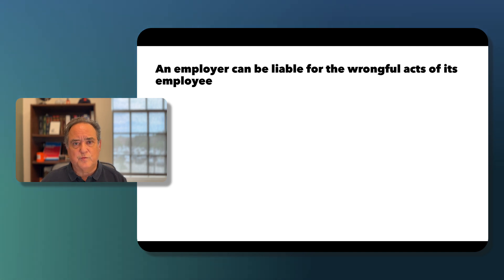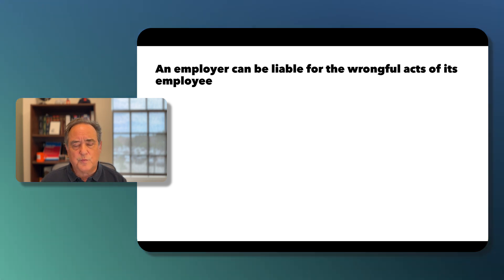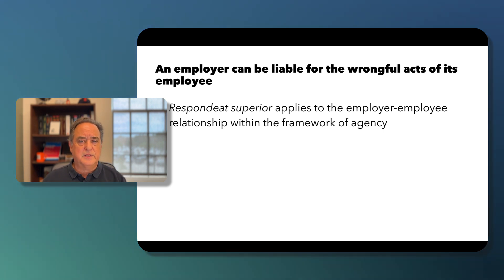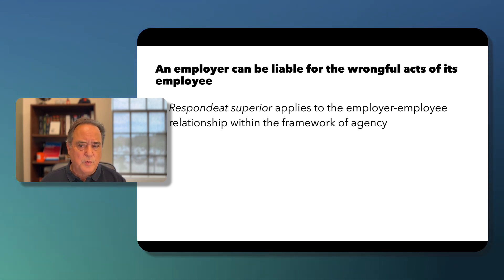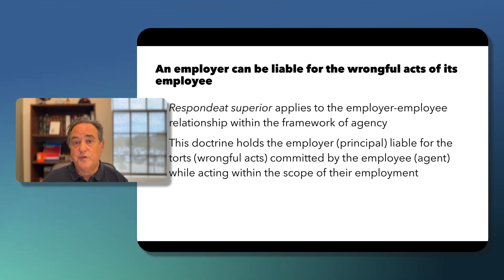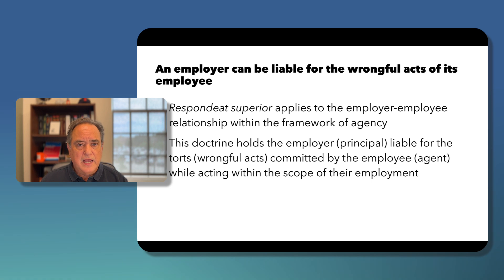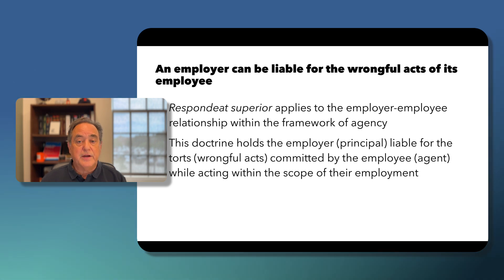We see this all the time — an employer can be liable for the wrongful acts of its employee. This is a specialized form of vicarious liability called respondeat superior, which applies to the employer-employee relationship within the framework of agency. This doctrine holds the principal liable for the torts — those wrongful acts — committed by the employee, who is the agent, as long as the agent is acting within the scope of their employment.